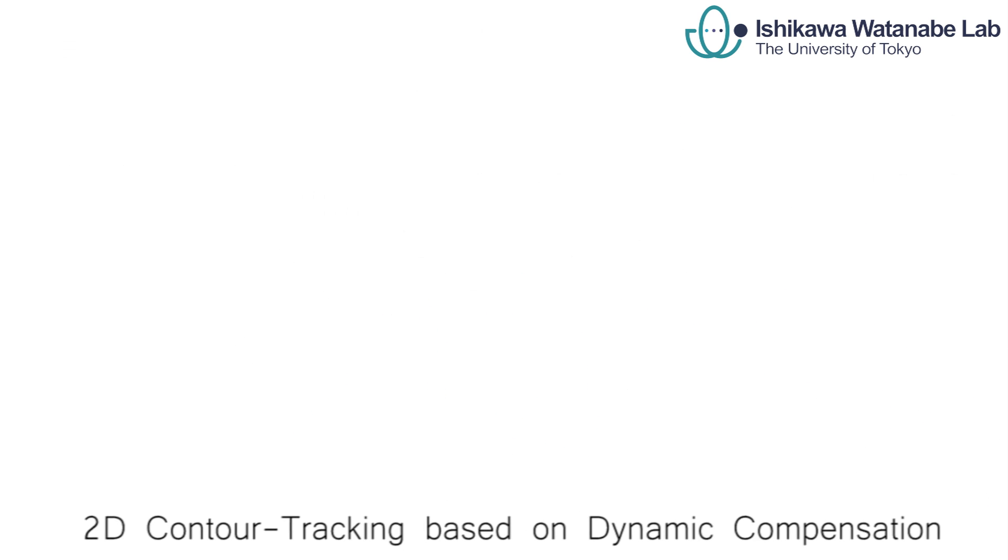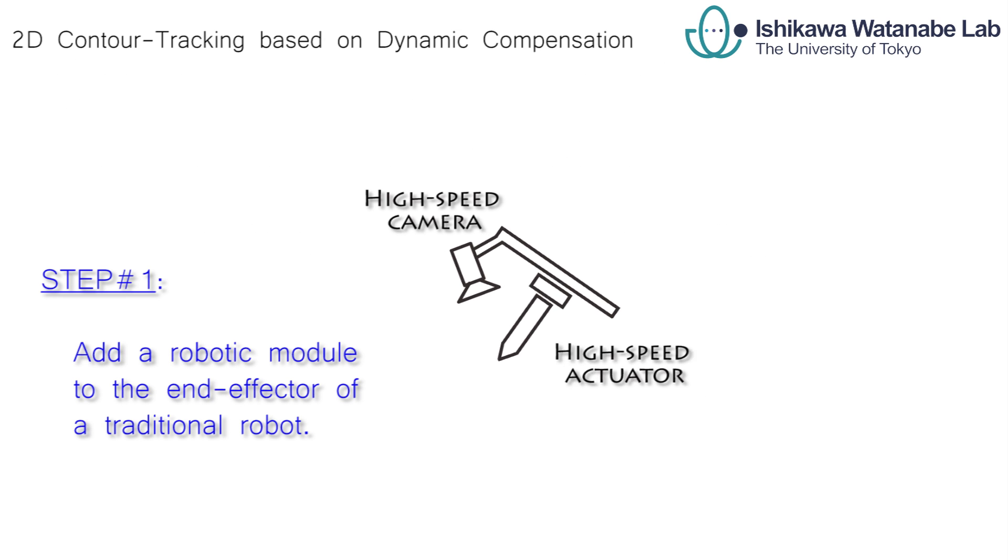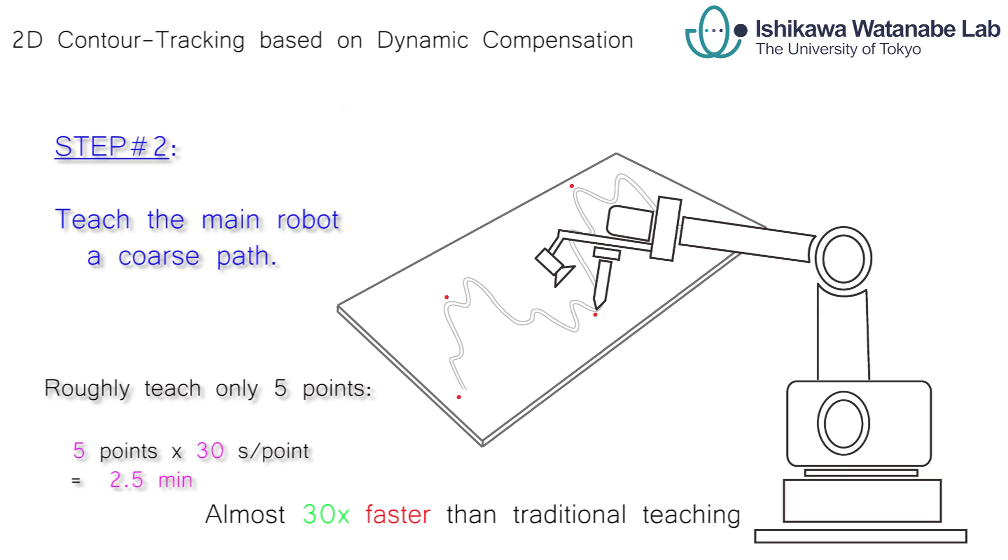We propose to perform this task by adding a high-speed robotic module under the dynamic compensation scheme. Through this method, a coarse global path can be easily taught with very few roughly chosen teaching points.